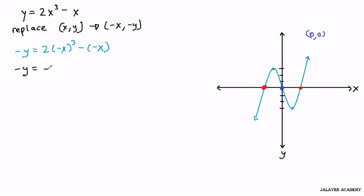So this whole thing becomes negative 2x cubed. And this becomes a negative and a negative becomes positive, so we get plus x.